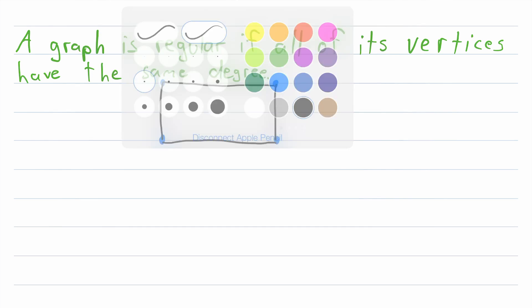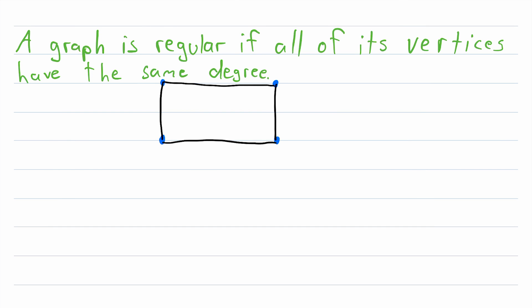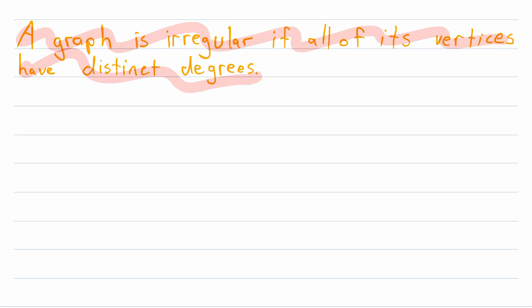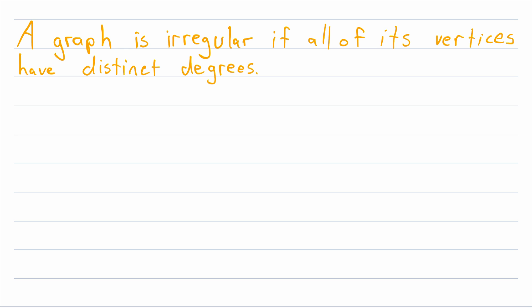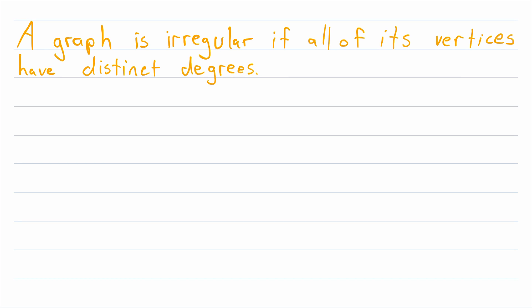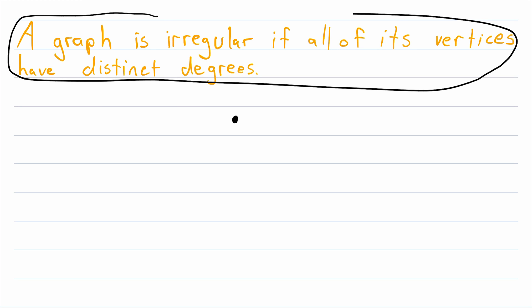When we start to consider irregular graphs, we might think it's natural to define an irregular graph as any graph whose vertices all have distinct degrees — the same as saying none of its vertices have the same degree. But as it turns out, this is not a very interesting definition, and I already did a video on this. It turns out that if this is how we define irregular graphs, then the only irregular graph is one that has a single solitary vertex.